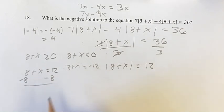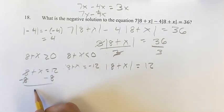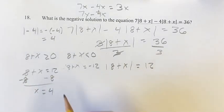So getting x on its own here, we subtract 8 from both sides. We're left with just x on this side, equal to 12 minus 8 is equal to 4.